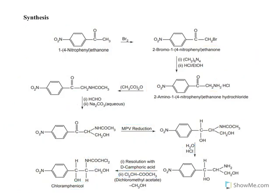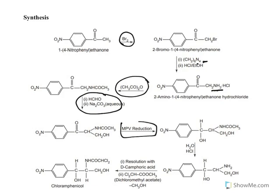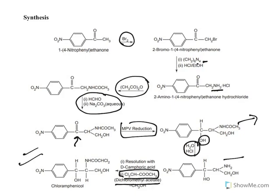Finally, chloramphenicol is obtained by using dichloromethyl acetate reagent, which attaches the dichloroacetyl group, giving the final product. To summarize the synthesis: bromination facilitates introduction of the amine group; amine is protected by acetic anhydride; the carbon is introduced by formaldehyde; MPV reduction selectively reduces keto to alcohol; acid hydrolysis removes the acetyl group; and the dichloroacetyl side group is attached using dichloromethyl acetate.